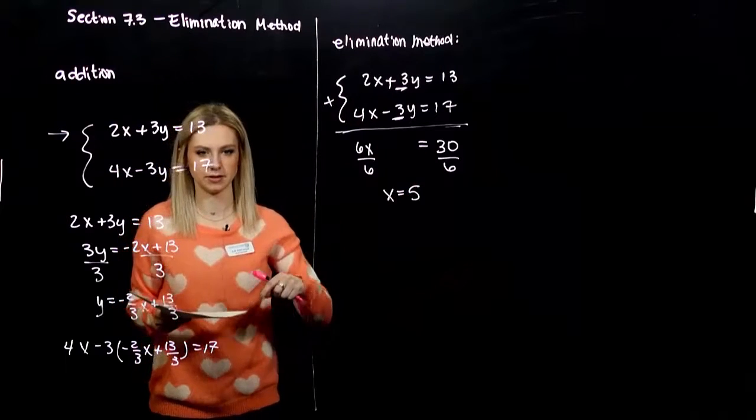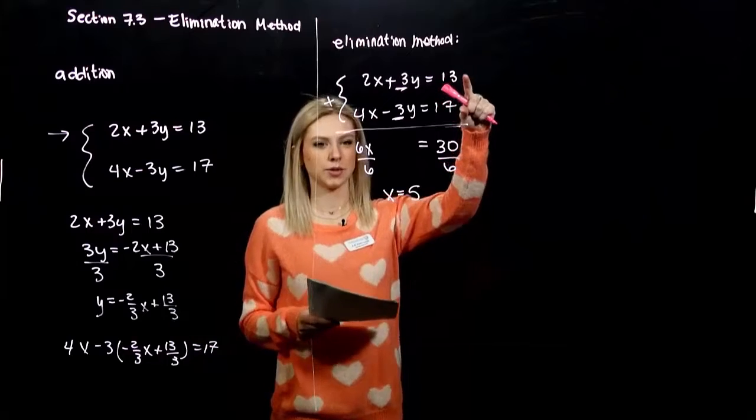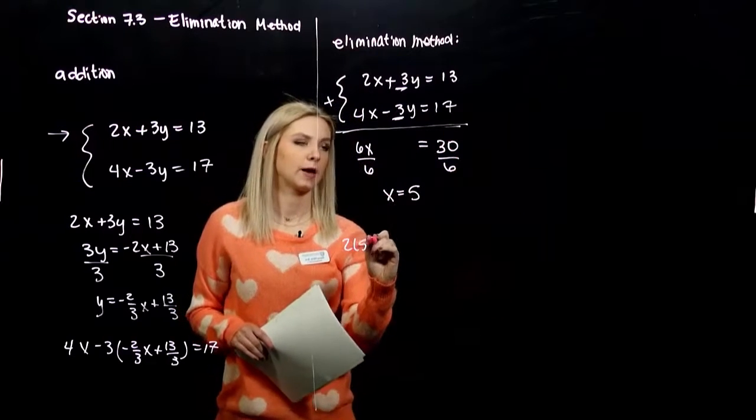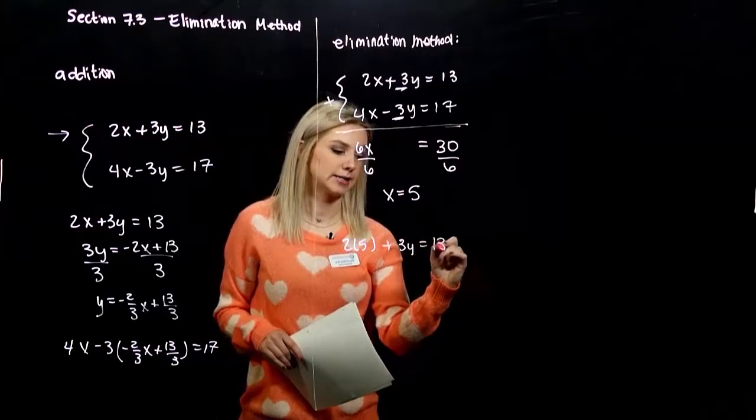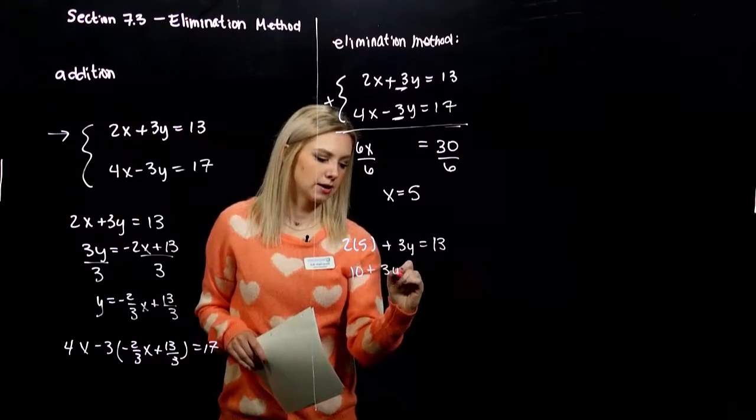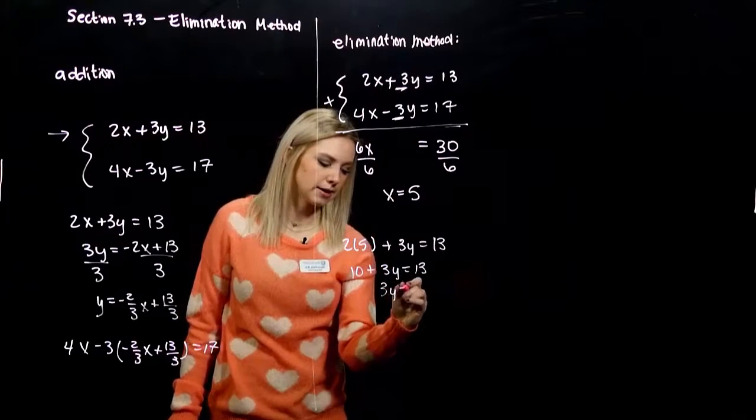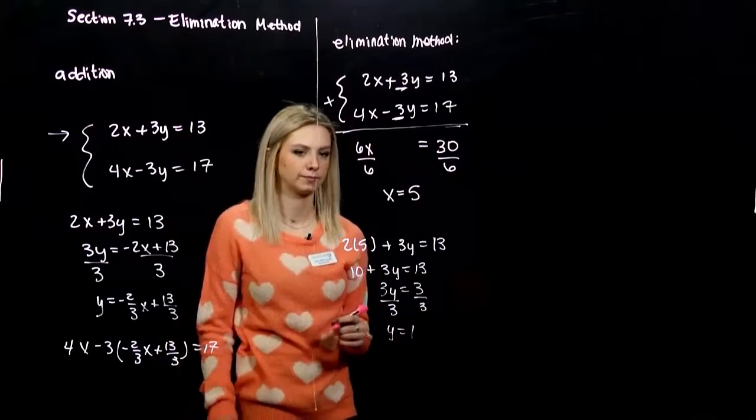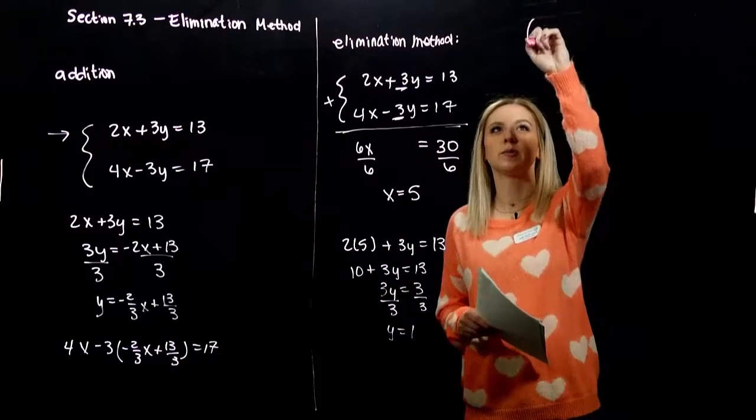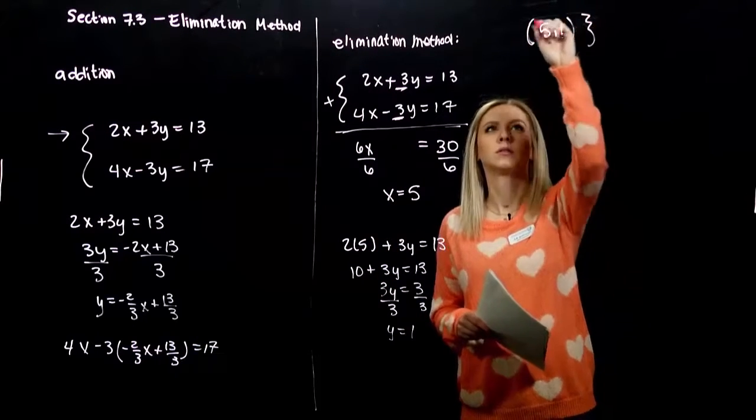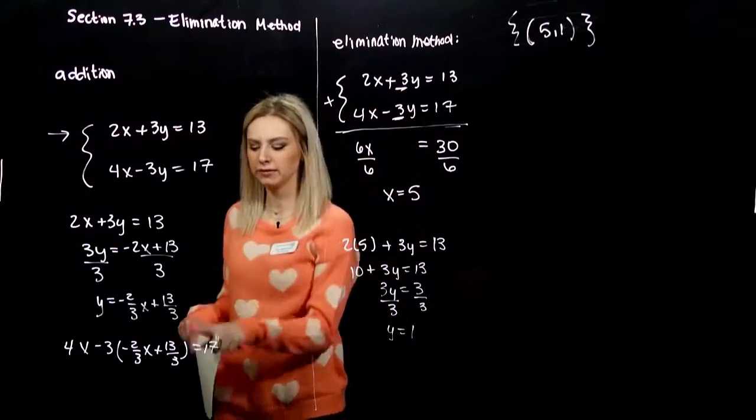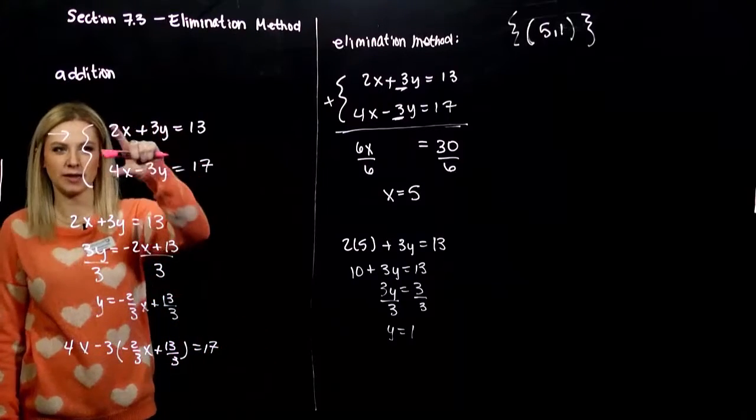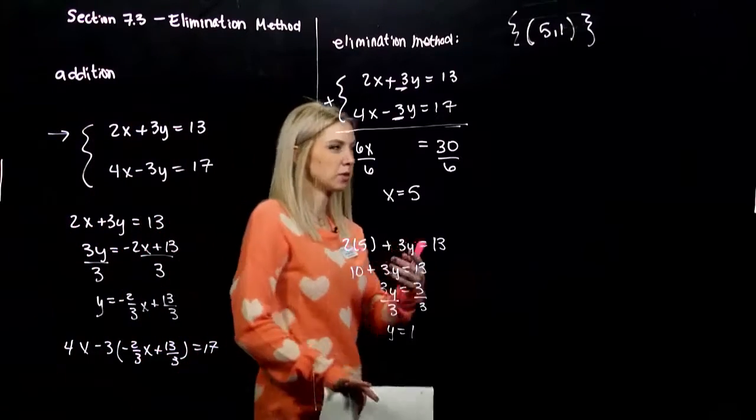So we solved the first part of the system, the x coordinate. Now we need the y. We've got two different choices, now we substitute, which we're comfortable with. Plug 5 back in for x, solve for y. I'm going to plug it into the first. You can plug it in the second and see you get the same exact thing. So 10 plus 3y is 13. So 3y is equal to 3 if we subtract 10 from both sides. So y was equal to 1. So our solution goes through the point 5, 1, and with that elimination method, we didn't have to deal with any fractions.